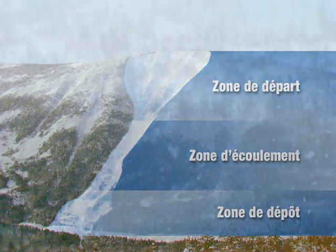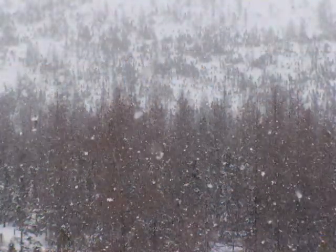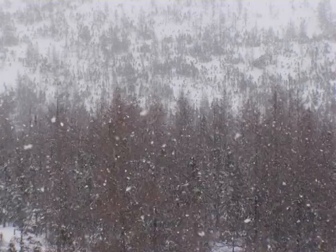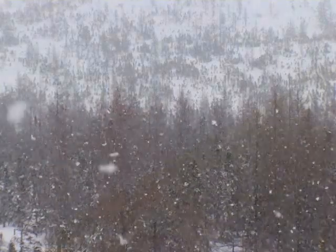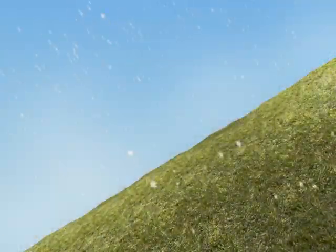Les avalanches surviennent dans des pentes de 25 à 60 degrés et plus, généralement entre 30 et 45 degrés. Tout au long de l'hiver, les chutes de neige se déposent en couches successives, formant ainsi ce qu'on appelle le manteau neigeux.